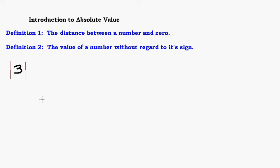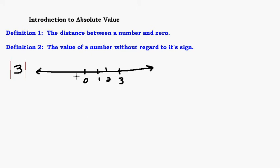You read it as 'the absolute value of three,' and that means the distance between three and zero. If I look at a number line with zero in the middle and count one, two, three to the right and negative one, negative two, negative three to the left, the distance between three and zero is three steps. So the absolute value of three is three.